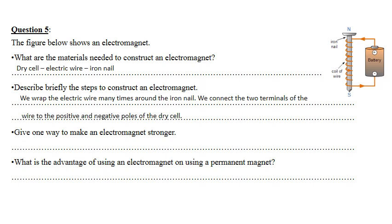Part three — give one way to make an electromagnet stronger: either increase the number of wrappings around the iron nail, or use a stronger dry cell — for example, replacing a 3-volt cell with a 9-volt cell. Write only one way. Part four — the advantage of an electromagnet over a permanent magnet is that we can control it: we can turn it on or off whenever we want.